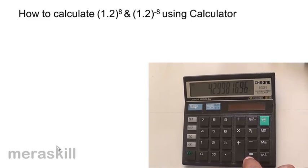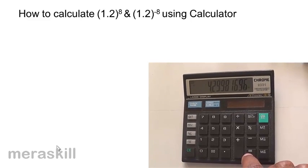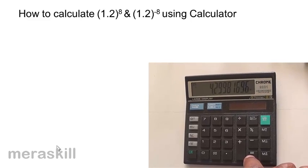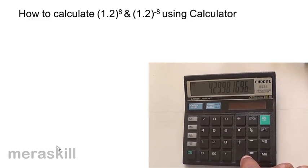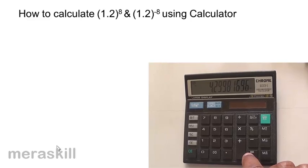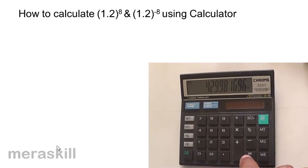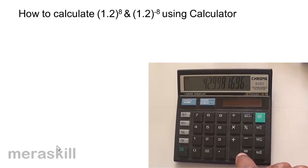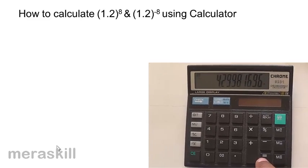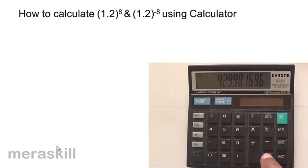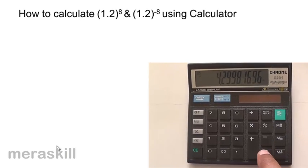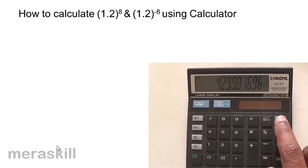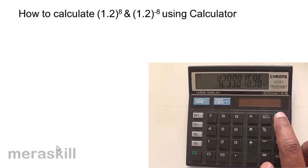It turns out to be 4.29981696. So basically you have multiplied 1.2 by itself. You just have to take care that when you press it once — that is, 1.2 into itself — it is already counted as 2. So you have to start counting with 2 once you press it, and hence you get it this way.